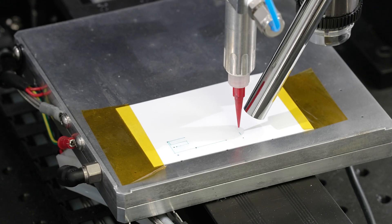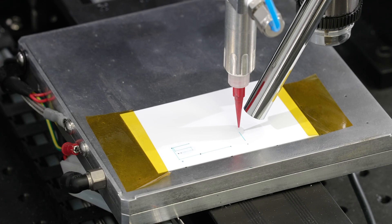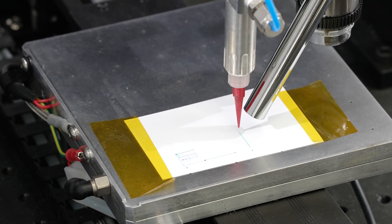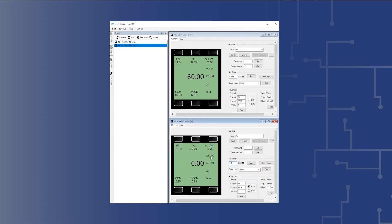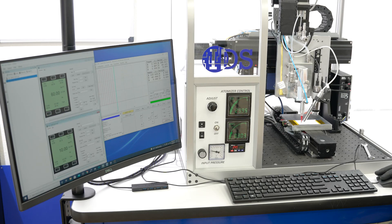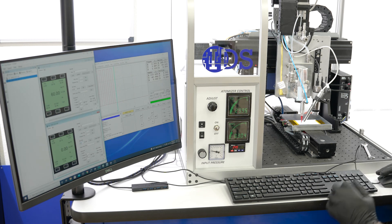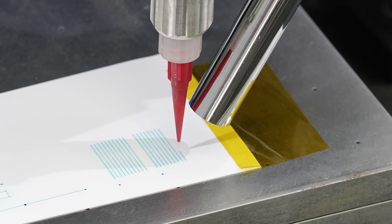Print the pattern and observe the printed line properties. If a narrower line width is needed, the print speed can be increased or the aerosol gas flow rate can be decreased. Work back and forth with the print pattern until the desired print properties are achieved. You are now ready to start printing.